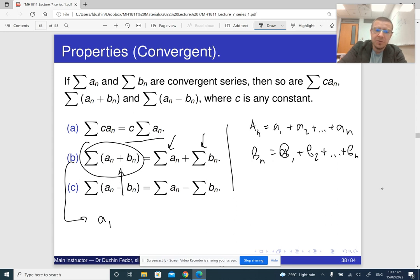So then what is the partial sum of this series? The partial sum of this series is going to be a_1 plus b_1 plus a_2 plus b_2 plus and so on plus a_n plus b_n. Let's say it's S_n. But this is really just A_n plus B_n.